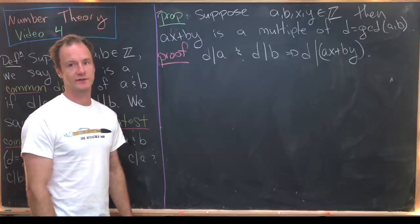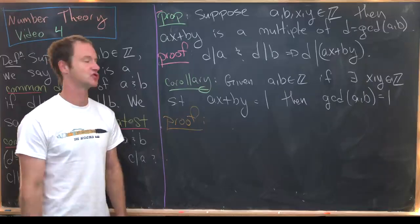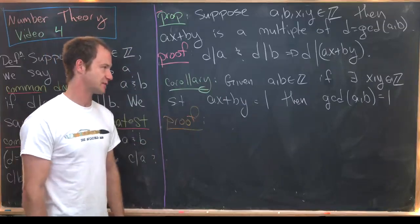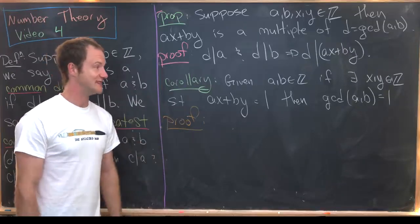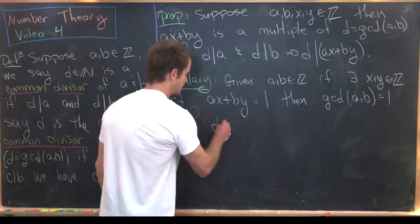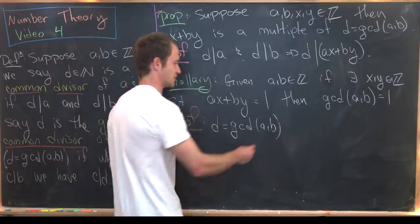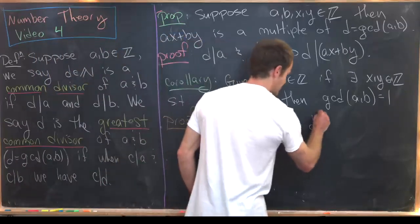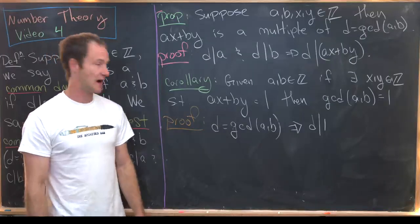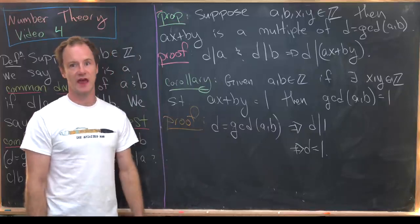Here's a super important corollary: if a and b are integers and there exist integers x and y such that ax plus by equals one, then the GCD of a and b equals one. Let d equal the GCD of a and b. By the proposition, d divides ax plus by, but ax plus by is one, so d divides one. The only integers dividing one are plus and minus one. Since GCDs are always positive, d must equal one.